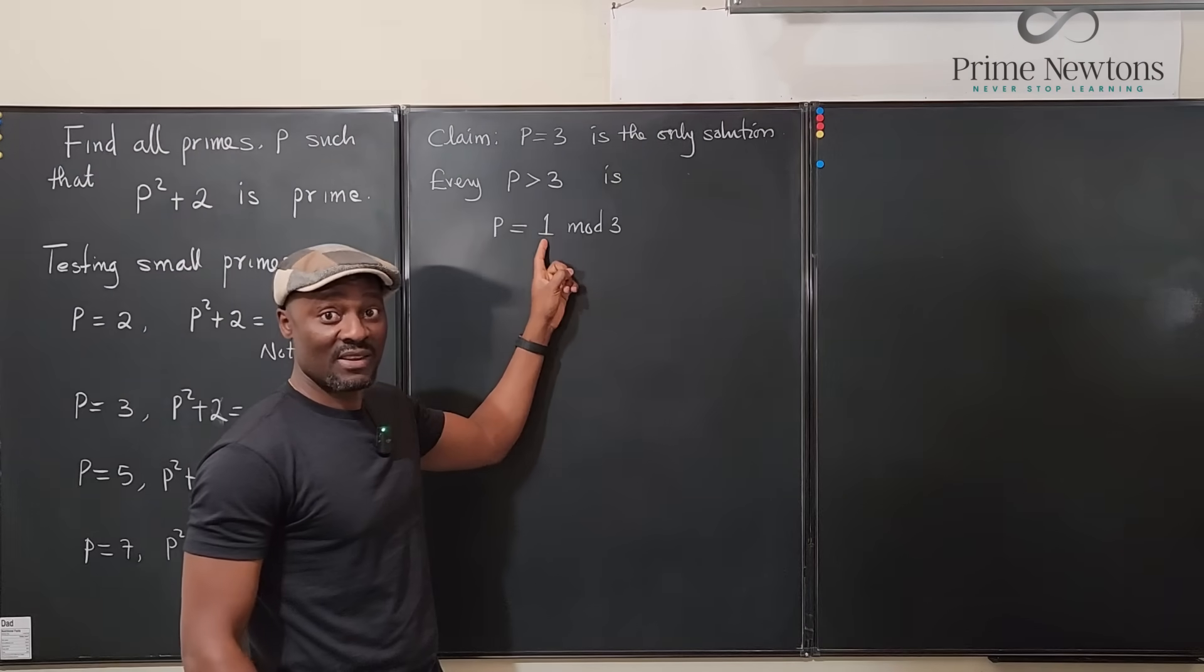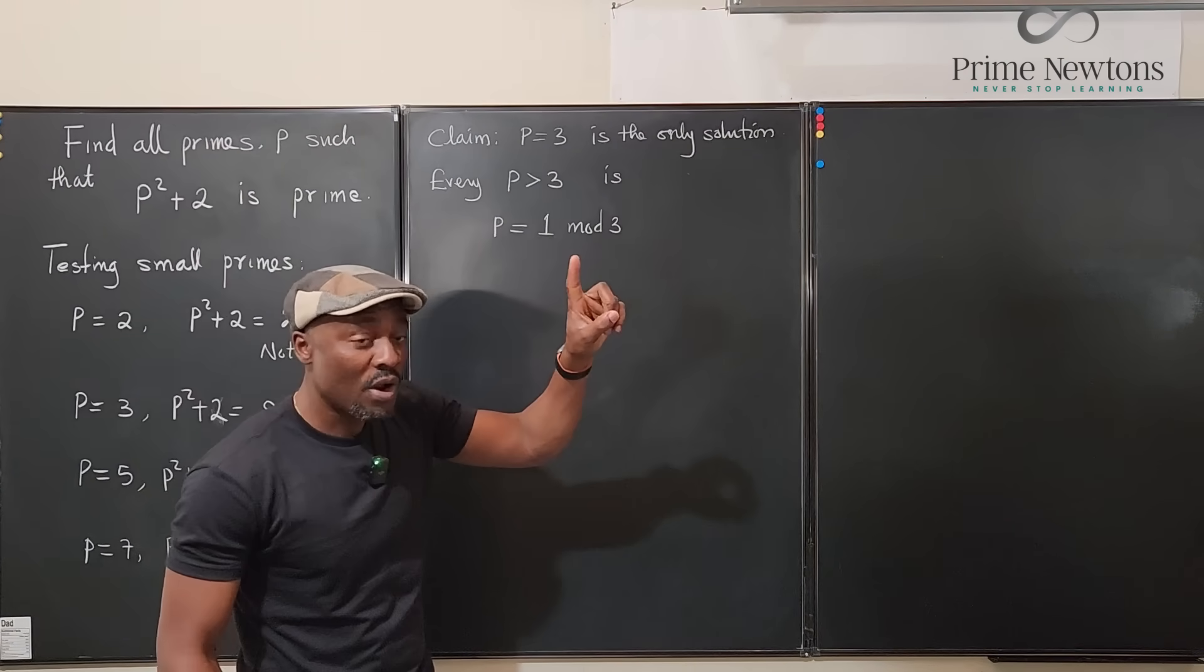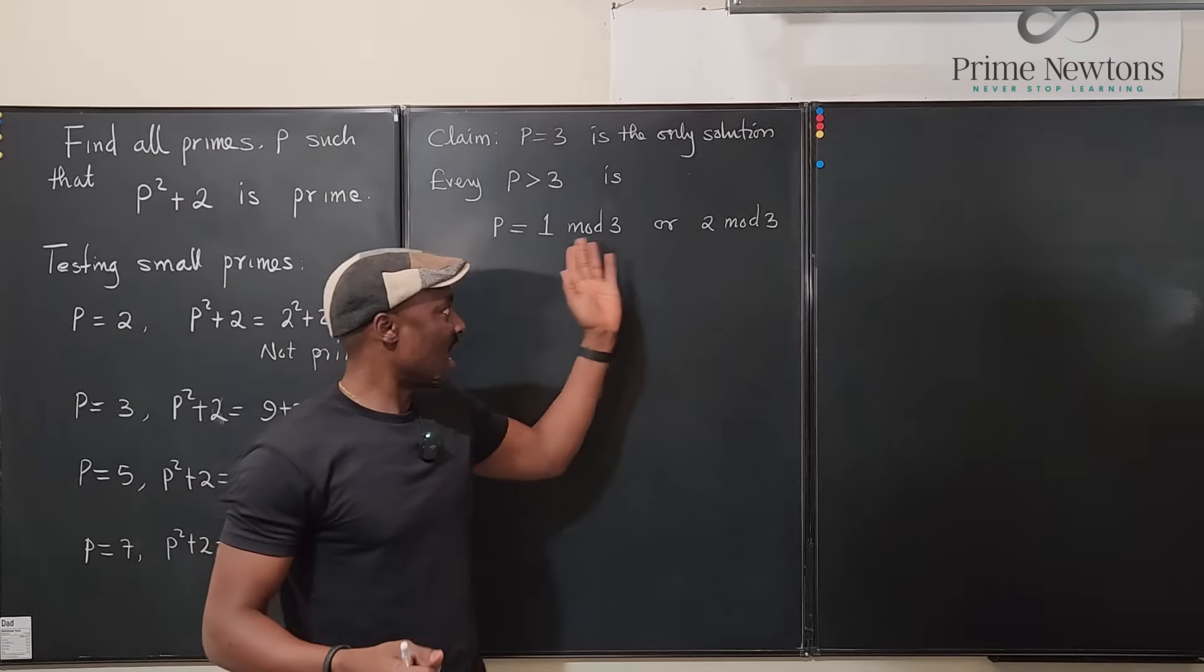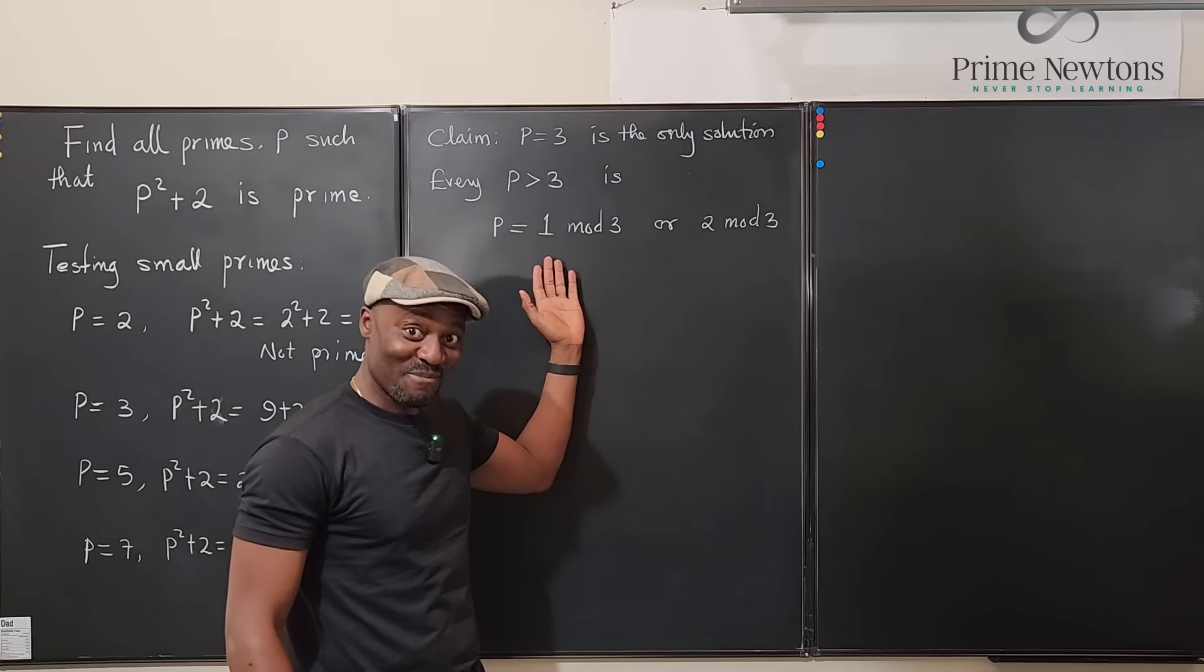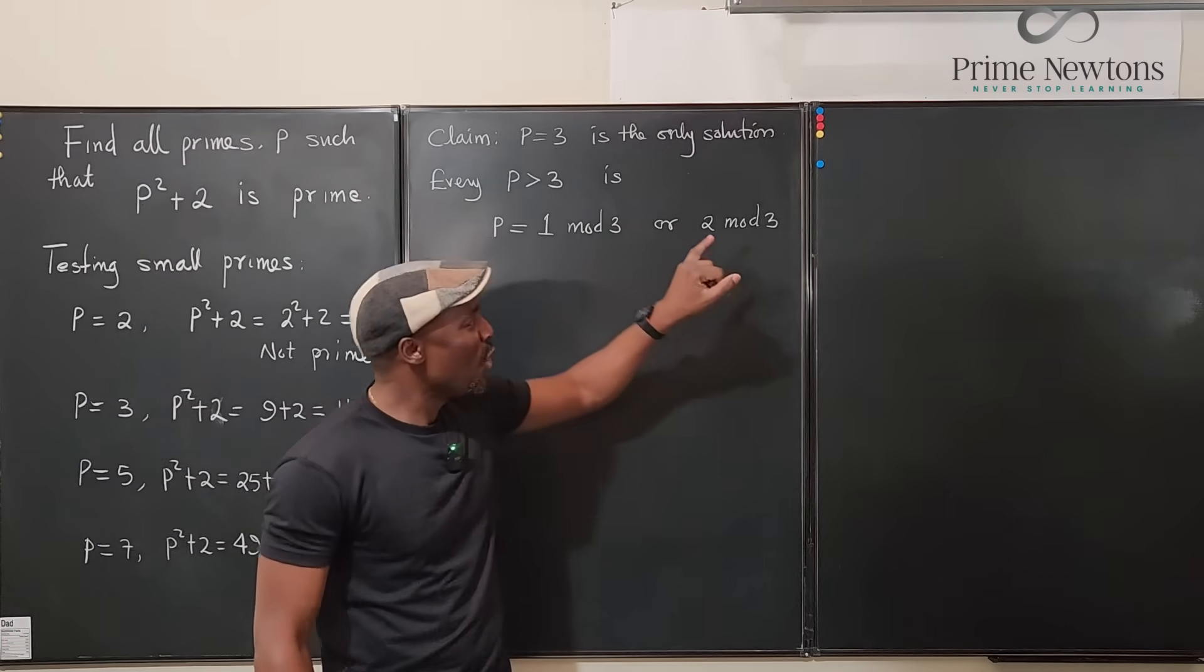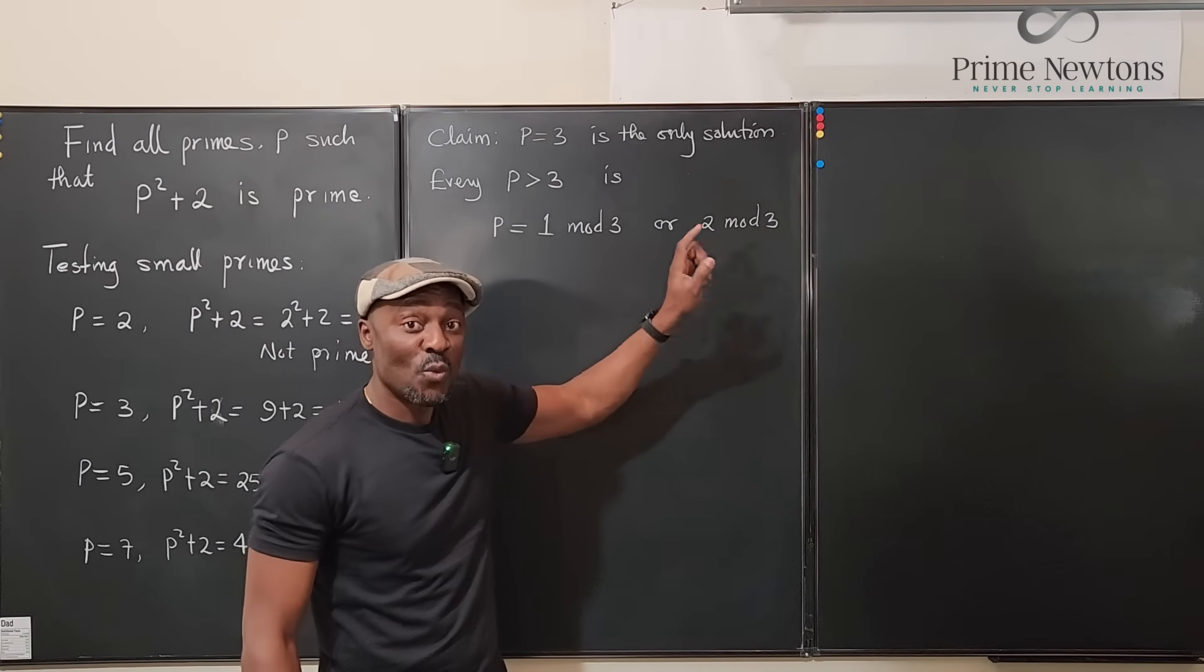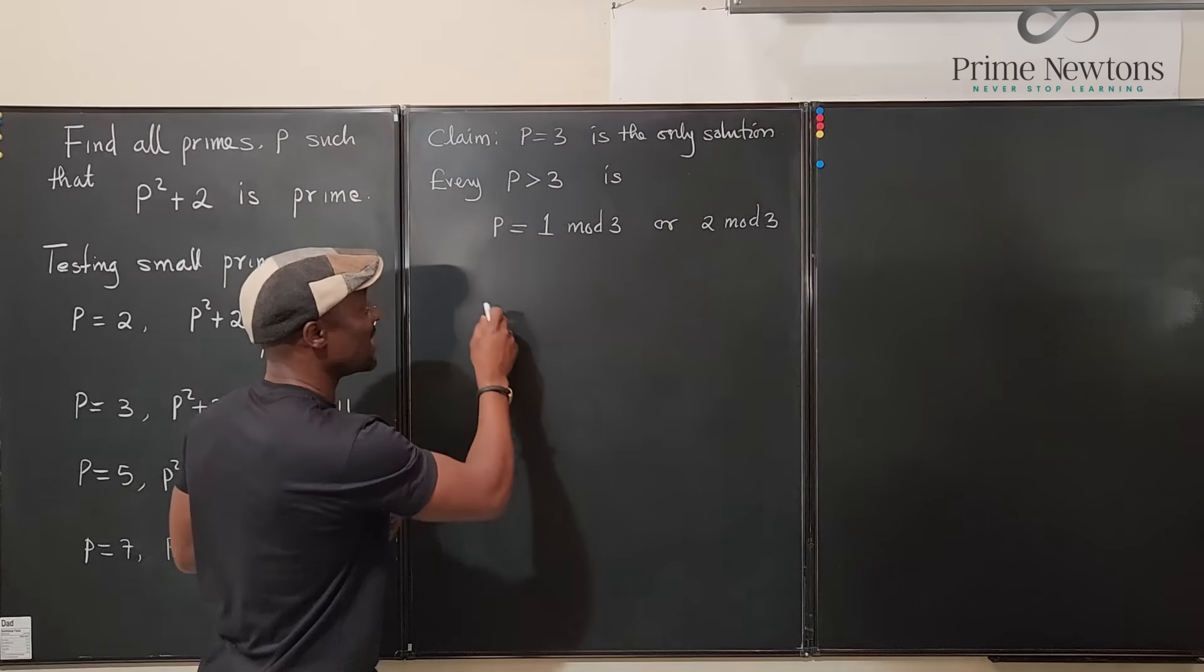So every prime greater than 3 is p equals 1 mod 3, that is if you divide this number by 3 you have a remainder of 1, or it's going to be 2 mod 3. Any number, it's either divisible, remainder of 1 I've said that multiple times, or a remainder of 2.